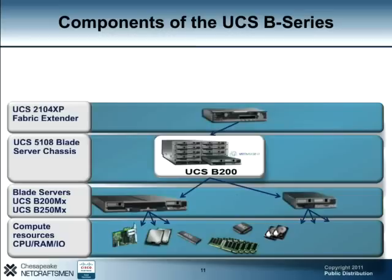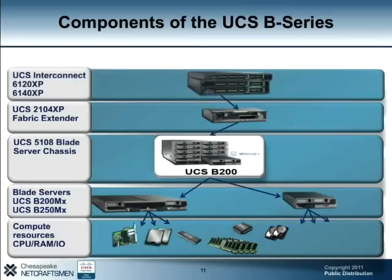The fabric extender modules provide network and storage connectivity to the chassis. The fabric extenders connect the UCS B chassis and the fabric interconnect. The 2104 XP fabric extender has four SFP ports that provide 10 Gig-E network and Fiber Channel over Ethernet connectivity. In addition to providing LAN and SAN connectivity, the extenders also manage the chassis environment, simplifying diagnostics, cabling, and management. Each UCS chassis can have up to two fabric extenders for redundancy. You can think of the fabric extender as a distributed line card for the UCS Fabric Interconnect.